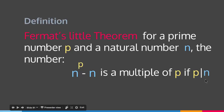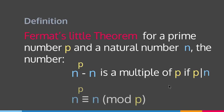So if p divides n — meaning if your prime number divides your natural number — then n to the p minus n is a multiple of p. This statement is equivalent to saying n to the p is congruent to n mod p.